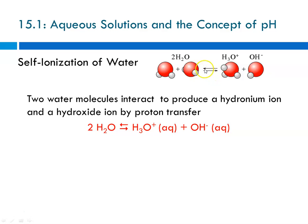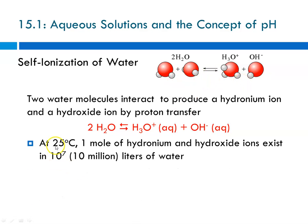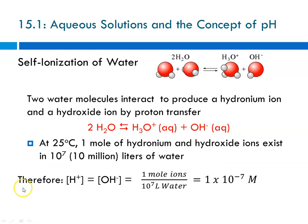Notice here we have double arrows, which means this is an equilibrium, so it's proceeding in both directions. At 25°C, one mole of hydronium ions and hydroxide ions exist in 10 to the 7th, or 10 million liters of water. In neutral water, the concentration of H⁺ or H₃O⁺ is equal to the concentration of OH⁻. If you do that division, the concentration of H⁺ equals the concentration of OH⁻ at 25°C, which is 1×10⁻⁷ molar.